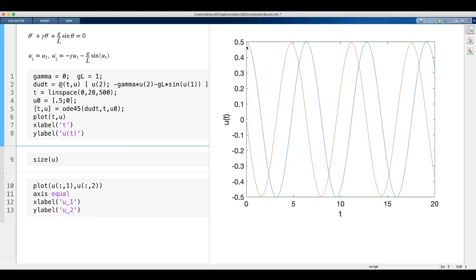And the solution looks a lot like a cosine, the blue is u1, and a sine or a negative sine, that's the red, which is u2. If you like, you can also think of these as theta and theta prime. So when the pendulum is at maximum deflection, the velocity is momentarily 0. That makes sense. And when the pendulum is at the down position, the velocity is at a maximum or a minimum value. Again, that makes physical sense.